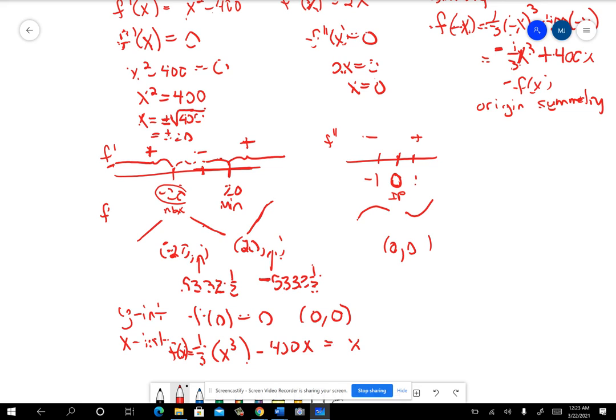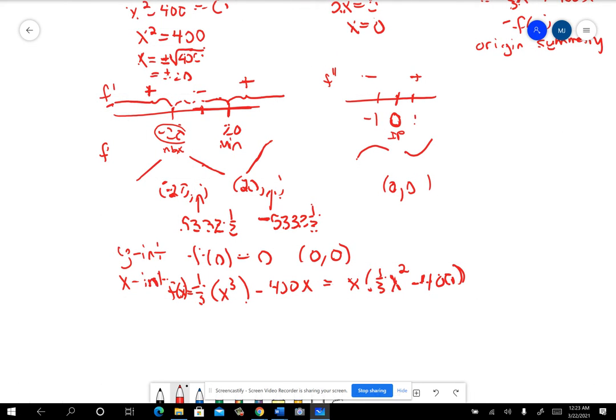So the factored form of that, I could factor out the x, and I'd have x times one-third x squared minus 400. So now I'm going to, I'm looking for x-intercepts, remember. So I'm looking for what causes that to equal zero. So it's going to happen at zero, which we already know that's a y-intercept. It's also an x-intercept. And then I need to set this one equal to zero.